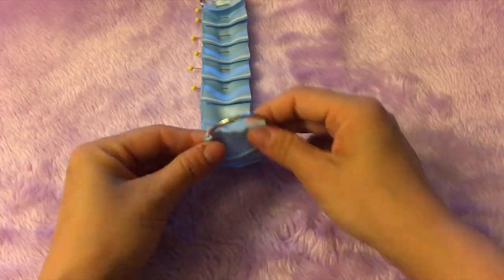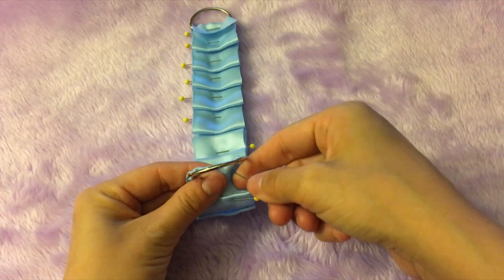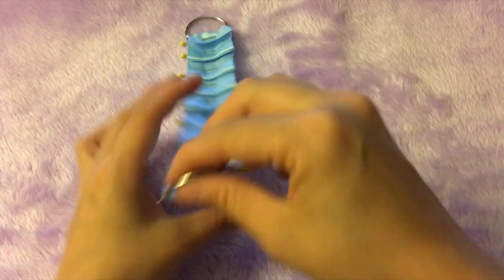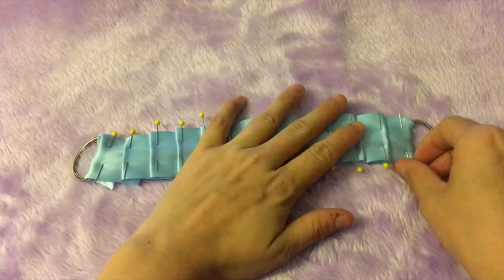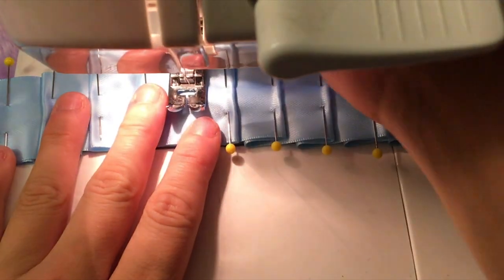Since the ribbon was a tad short, I did attach the two d-rings just to make sure that it still fits. It doesn't hurt to check before stitching down the pleats. Once you're all set, remove the d-rings from the collar and then we're going to stay stitch down the pleats.